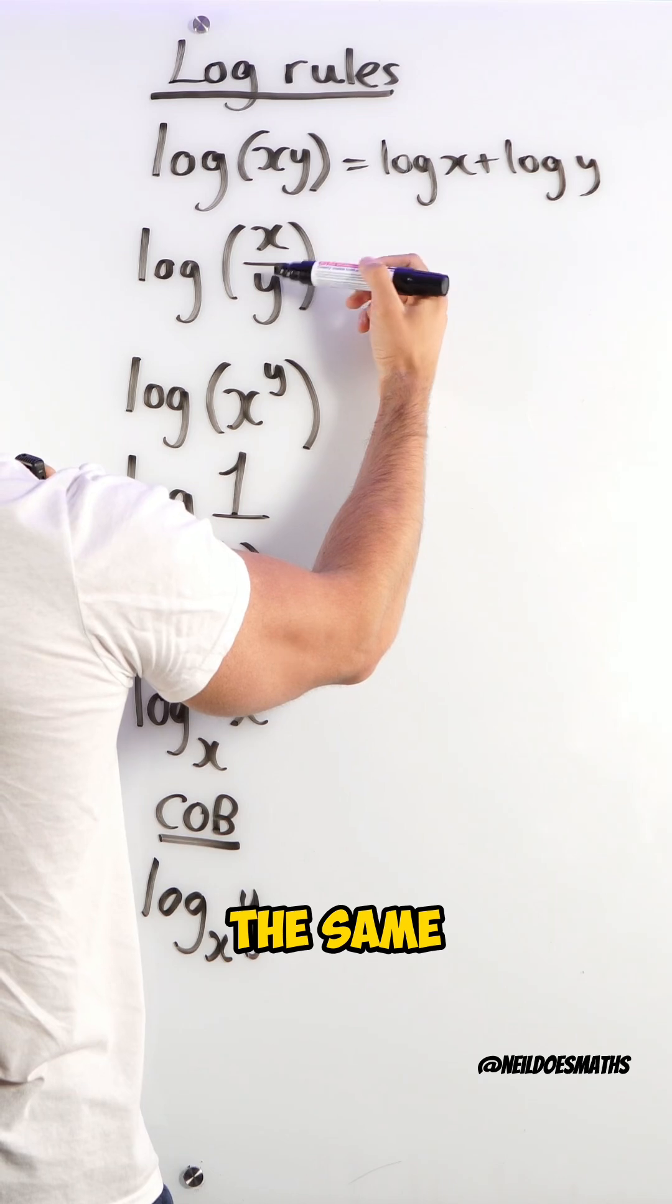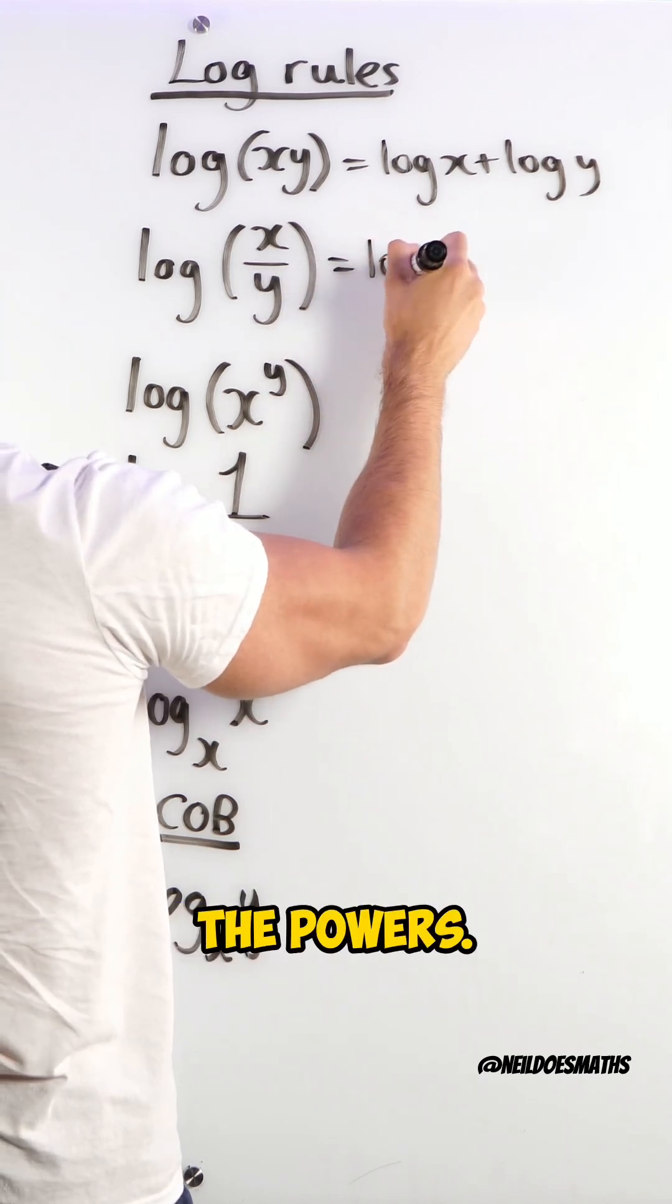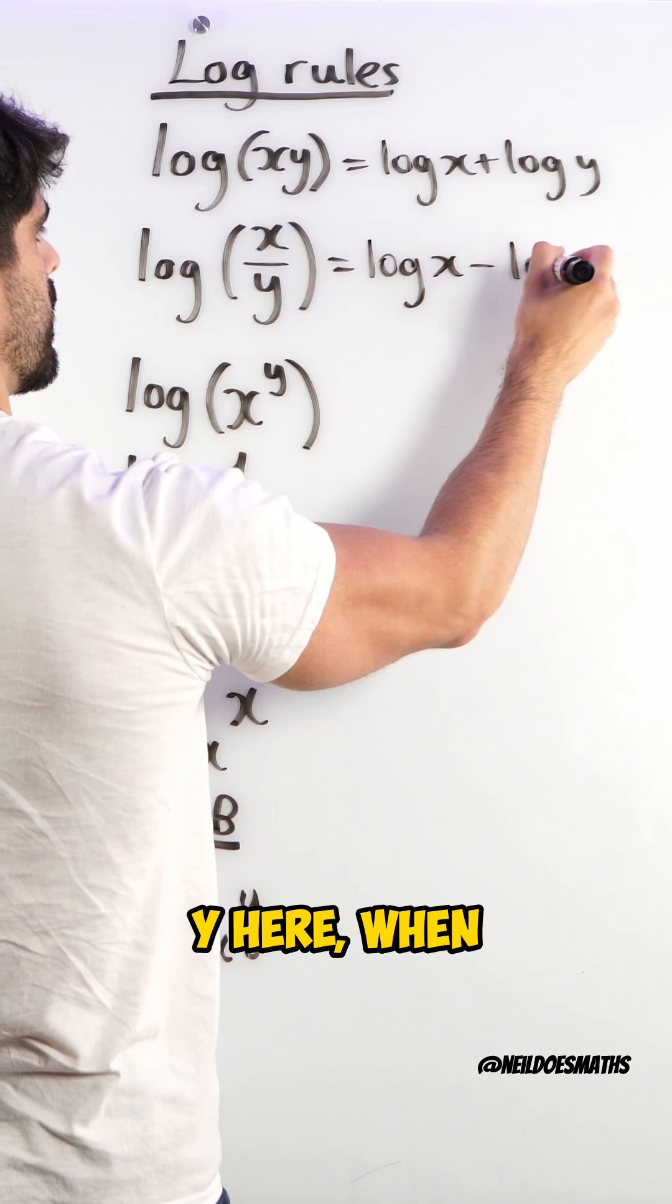When you divide two numbers with the same base, you take away the powers. So you get log x, take away log y.